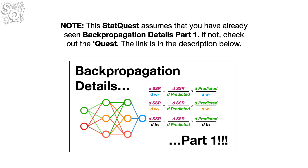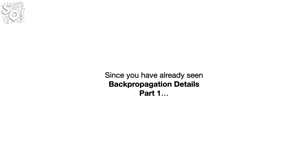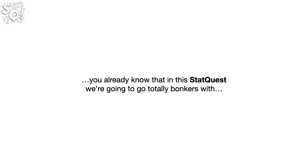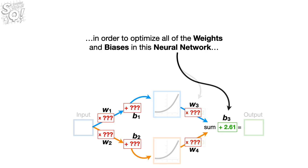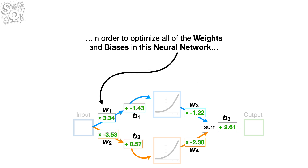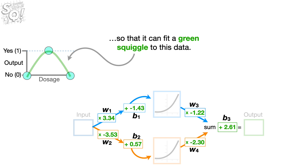Hello, I'm Josh Starmer and welcome to StatQuest. Today we're going to talk about Backpropagation Details, Part 2. Note, this StatQuest assumes that you have already seen Backpropagation Details, Part 1. If not, check out the quest — the link is in the description below. Since you have already seen Part 1, you already know that in this StatQuest we're going to go totally bonkers with the Chain Rule and Gradient Descent in order to optimize all of the weights and biases in this neural network so that it can fit a green squiggle to this data.